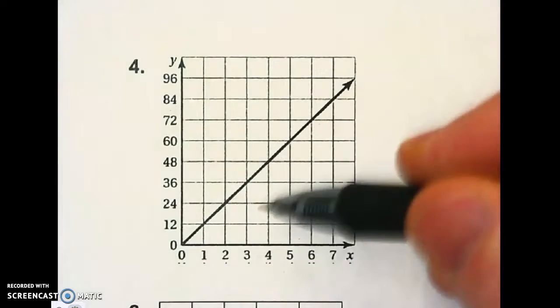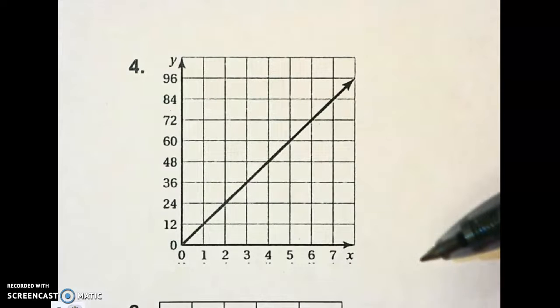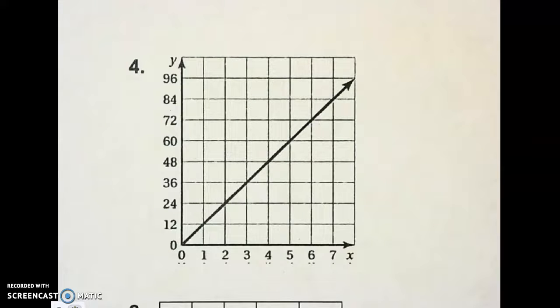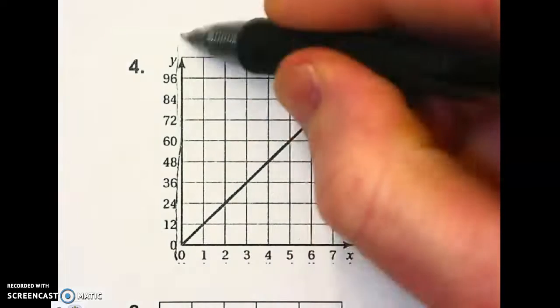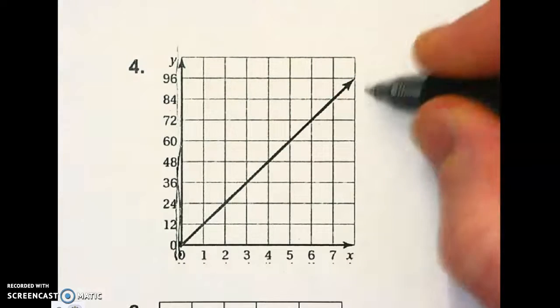The easiest thing to find on a graph for writing a function rule - it's actually just an equation of a line, y equals mx plus b - is to find the y-intercept. On the graph, that's the easiest part right here. Where does it hit the y-axis? This is the y-axis, it's right at zero, so b is zero.